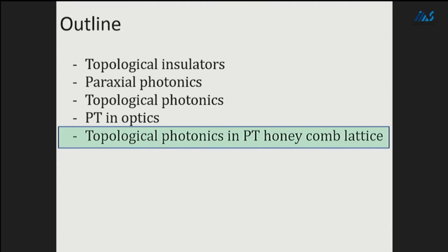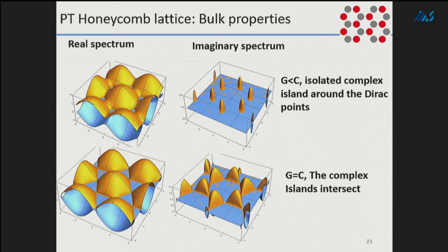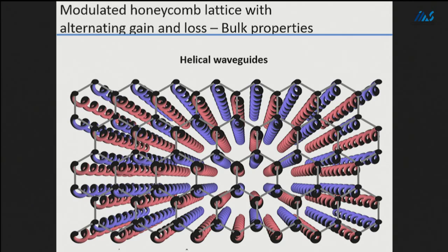This brings us to our work. We consider a PT honeycomb lattice. The bulk properties: if the gain is smaller than the coupling, we get islands of complex energies around the Dirac points. For a given Kx and Ky, you have either real energy or complex energy. When you reach the threshold, these islands start to intersect one another.